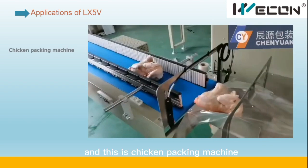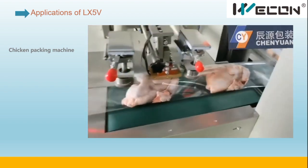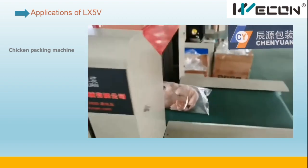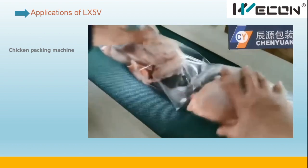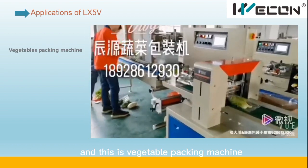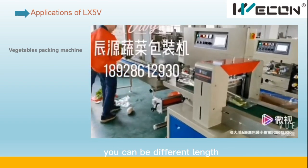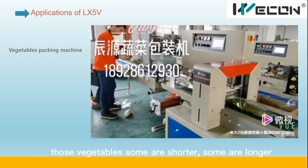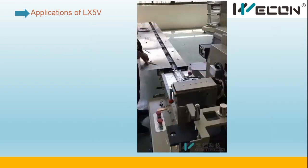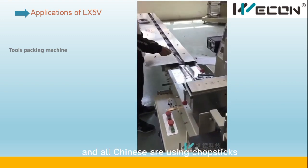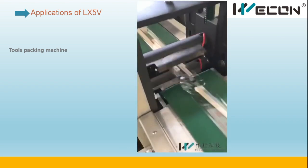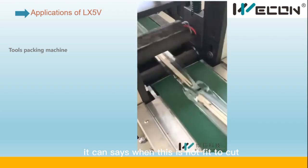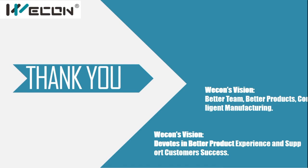This is a chicken packaging machine. Next is a vegetable packing machine — it can handle different-length packages, as you can see some vegetables are shorter and some are longer. Finally, this is a chopsticks packing machine — chopsticks are widely used in Chinese dining. That's all for today; thank you very much for listening.